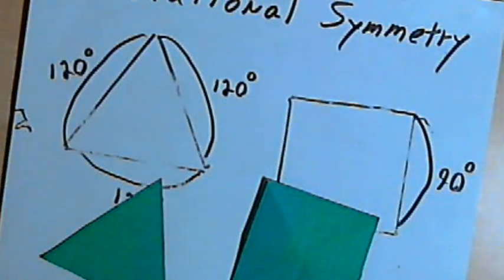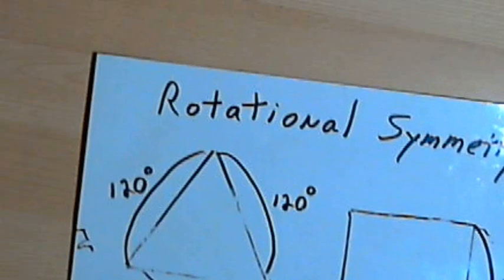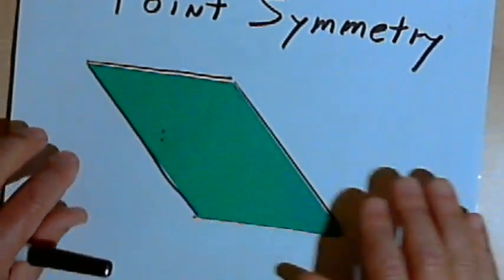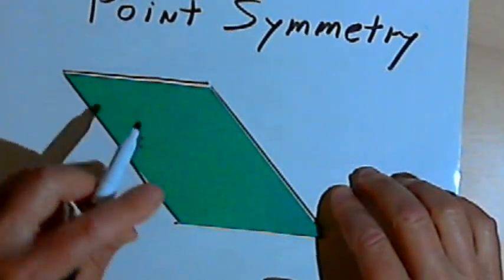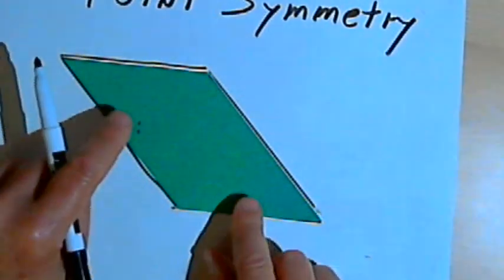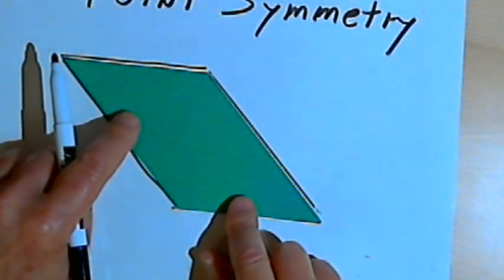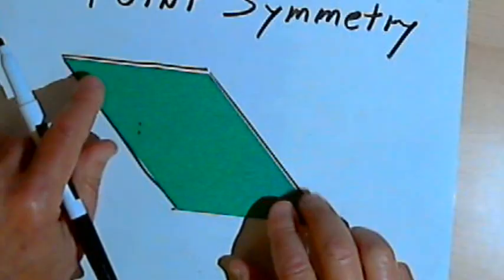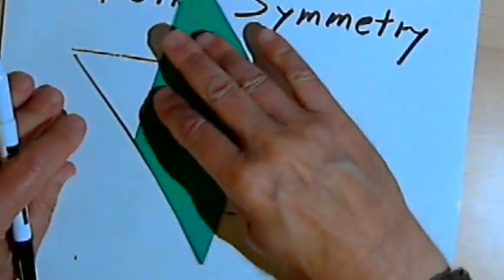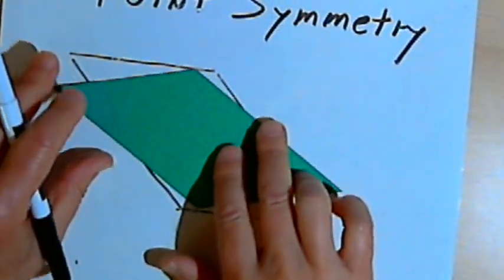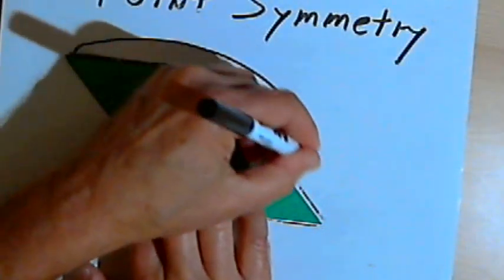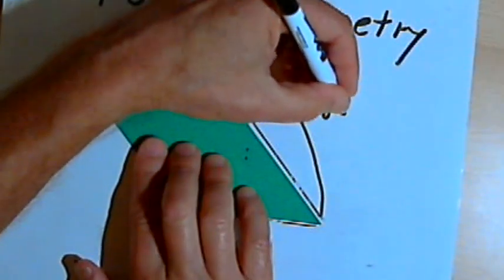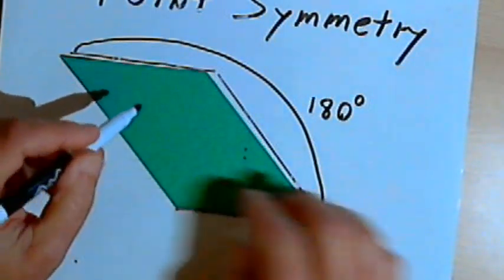Now there's a subset of rotational symmetry that's called point symmetry. And point symmetry is a property of anything that has rotational symmetry and can be rotated 180 degrees. So for instance, this parallelogram, if I start to rotate this, I've got to go all the way through a whole half turn, or 180 degrees, before it matches up with itself again.